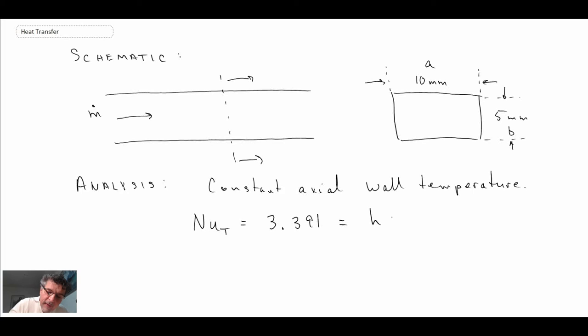And remember, this is Nusselt number evaluated using the hydraulic diameter. The properties—where will we evaluate the properties? Well, the property that we have to worry about is going to be k. Given that we're told we're dealing with a section of pipe where the mean or bulk temperature is 20°C and the wall temperature is 60°C...